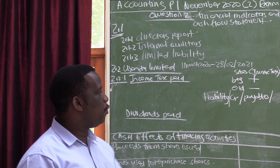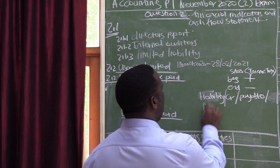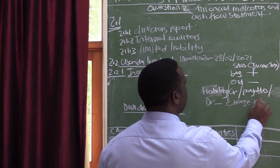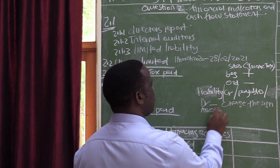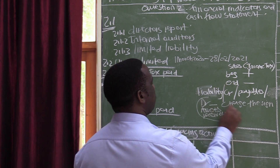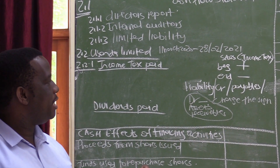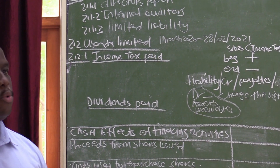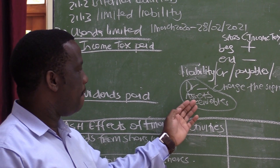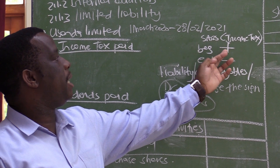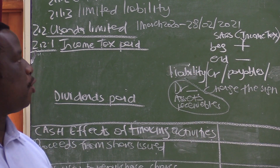Should it happen that your SARS balance is no longer under liability — it is under assets, or you see a DR sign, or it is recorded under receivables — then you need to change the sign. If the beginning is a DR or under assets or receivables, it will change to a minus. If the end is reflected under assets, it will change to a plus. So the formula is: income tax for the year, plus beginning, minus end — but only if everything is under liability.